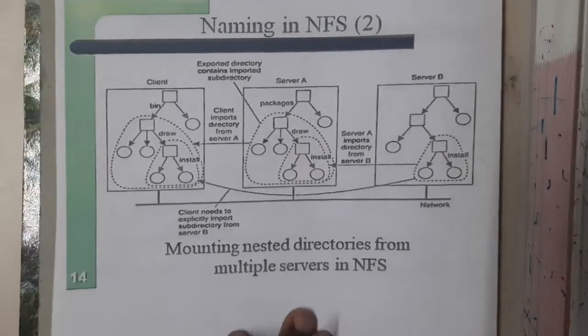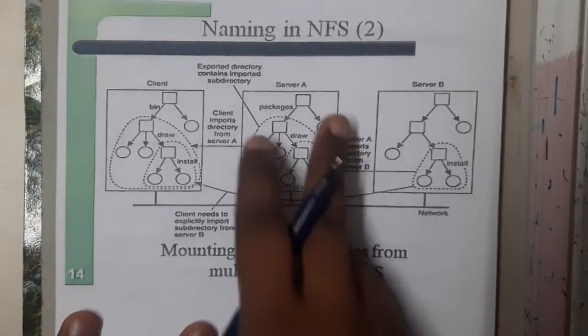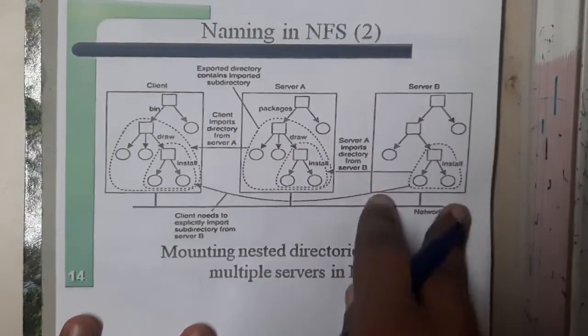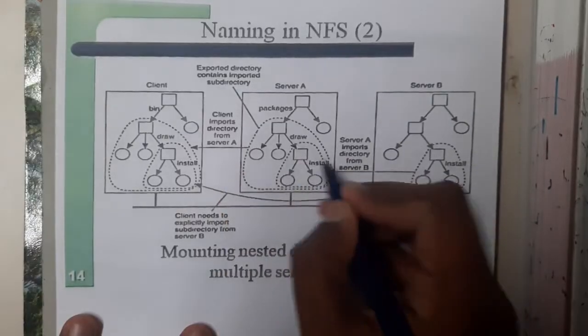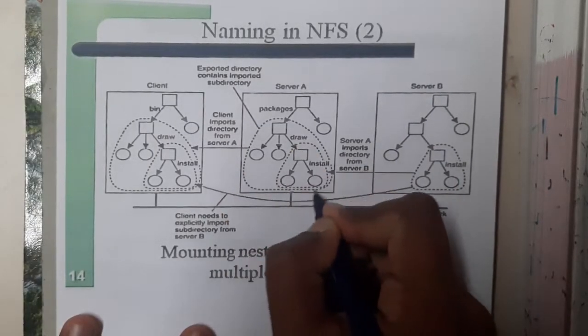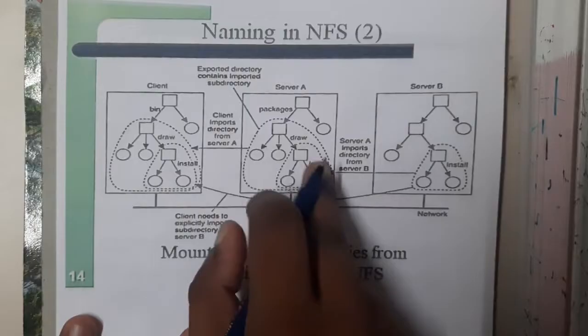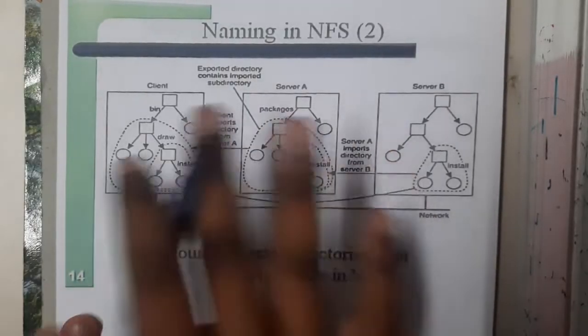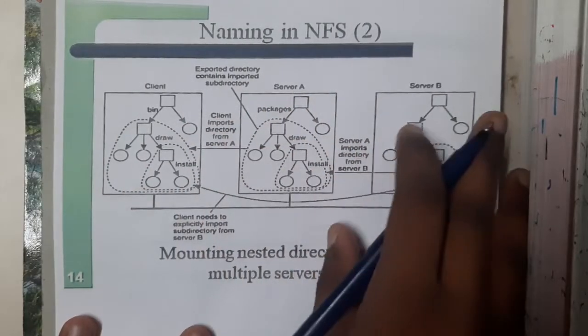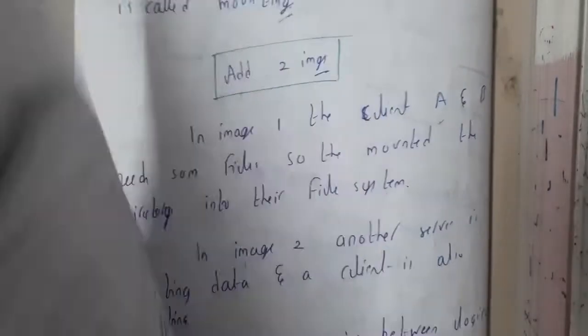Similarly in image 2, here we are having a server and one more server needs this data. So this server needs this part of data whereas this client needs the whole data. So even these kinds of operations can also be done using naming. This whole process will be calling it as mounting.